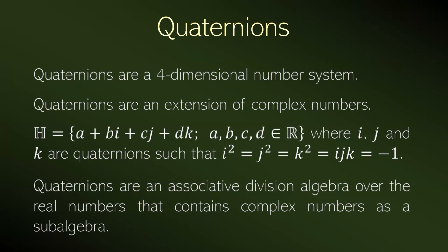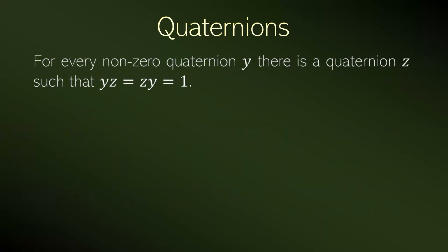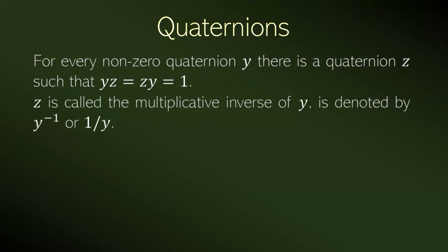Division is allowed except division by zero. The complex numbers are also an associative division algebra related to the addition and the multiplication of quaternions. For every non-zero quaternion, there is another quaternion such that the right multiplication and the left multiplication by the first one is the multiplicative neutral — the number one. This number is called the multiplicative inverse.